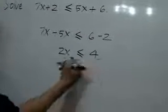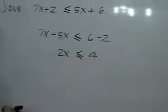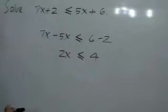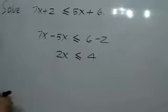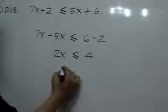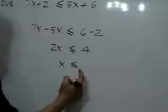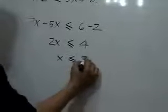We will divide both sides by the coefficient of x, which is 2. And since 2 is positive, the direction of the inequality is not affected. So we have x less than or equal to 4 divided by 2, or 2.